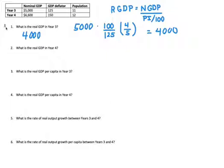All right. Now, what about year four? What is the real GDP for year four? Well, it's the same thing except different numbers. Now you have 6,600 as your nominal GDP. And then again, you're doing the same thing. Divided by the price index over 100 is the same thing as multiplying by the inverse. So it's 100 over 150.